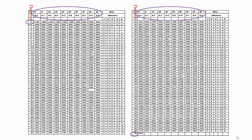The conversion between minutes and degrees was explained in my previous video, so I suggest you watch that. Now, in between any two successive minute columns, there is a difference of 5 minutes. That difference is addressed by the mean difference column, which starts from 1 minute and ends at 5 minutes. With the help of examples, let's understand the use of the natural cosine table.